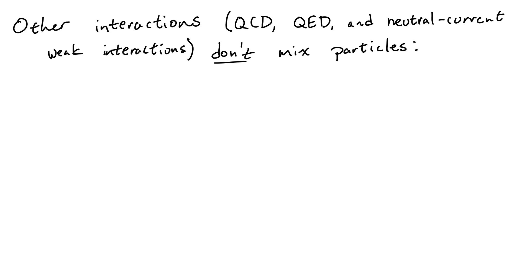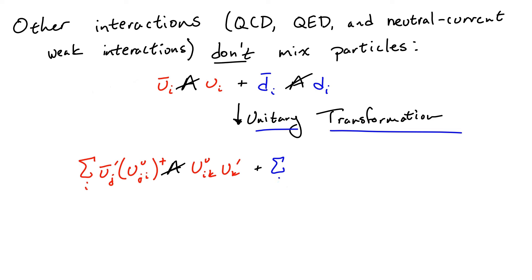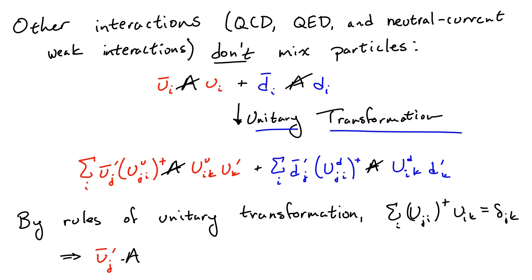As a side note, the interactions of QED and QCD aren't affected like the weak interactions, because QED and QCD always pair particles with their conjugates. So, when we perform a unitary transformation, the transformation will always hit its conjugate, and so the interactions will look the same no matter what linear combination we choose.